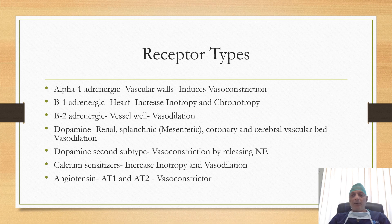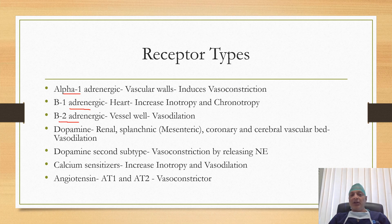These agents are of mainly two types: adrenergic agents and non-adrenergic agents. They work through different receptors. Alpha-1 adrenergic receptor is present in the vascular walls and it induces vasoconstriction. Beta-1 adrenergic receptor is present in the heart and it increases the inotropy and chronotropy of the heart. Beta-2 adrenergic receptor is present in the vessel wall and it causes vasodilation.